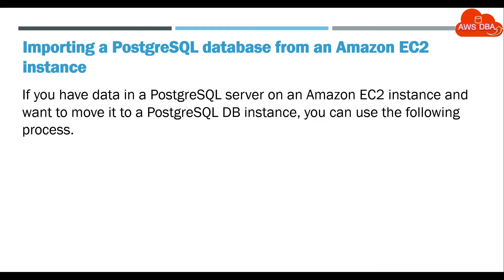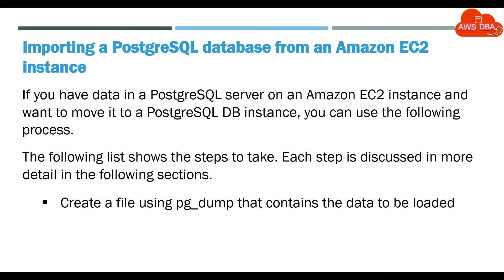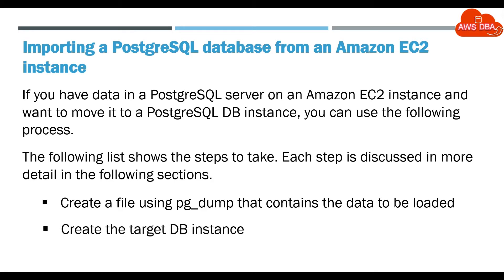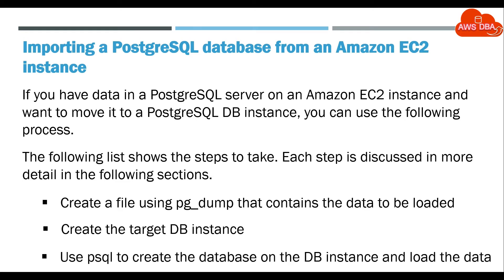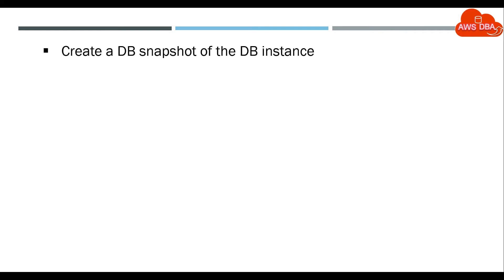If you have data in a PostgreSQL Server on an Amazon EC2 Instance and want to move it to a PostgreSQL DB instance, you can use the following process. The following list shows the steps to take, and each step is discussed in more detail in the following sections: create a file using pg_dump that contains the data to be loaded, create the target DB instance, use PSQL to create the database on the DB instance and load the data, and create a DB snapshot of the DB instance.